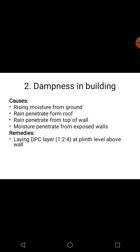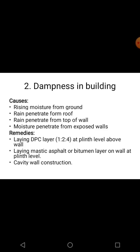Remedial measures for dampness include: laying a DPC (damp proof course) of 1:2:4 ratio at plinth level to avoid dampness from the bottom; laying mastic asphalt or a bitumen layer on the wall at plinth level, as bitumen is impervious and stops rainwater entry; and cavity wall construction to prevent moisture penetration from exposed walls.